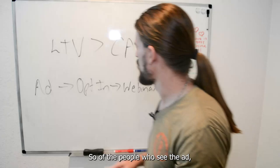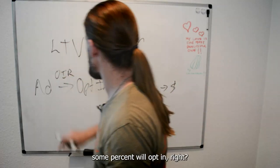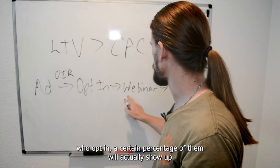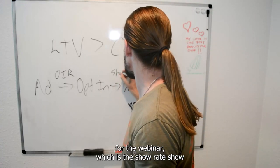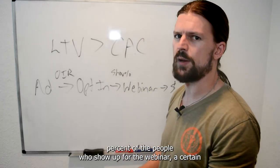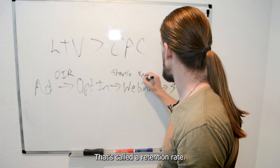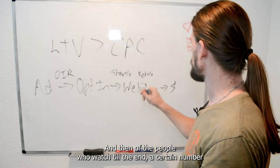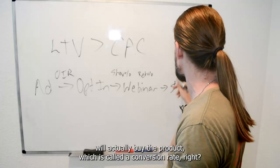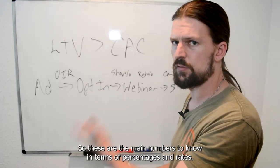Let's go through the rate numbers at each stage. Of the people who see the ad, some percent will opt in — that's the opt-in rate. Of those who opt in, a certain percentage will actually show up for the webinar — that's the show rate. Of those who show up, a certain percentage will watch to the end — that's the retention rate. And of those who watch till the end, a certain percentage will actually buy — that's the conversion rate.